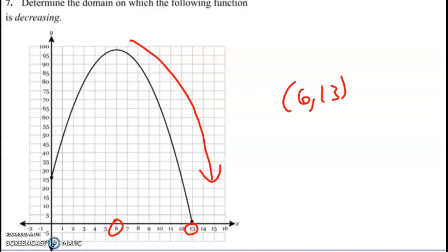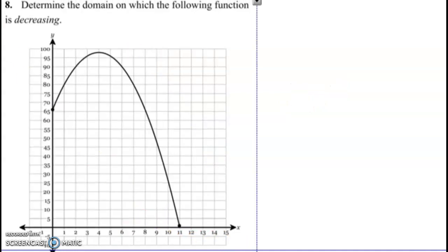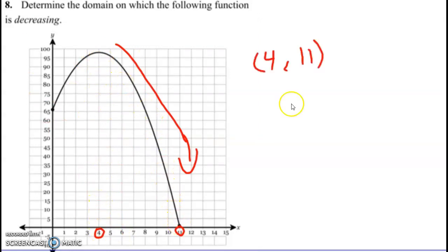Let's look at another example. It says determine the domain for which the function is decreasing. This is similar to the one we just did. It starts decreasing at 4, right about here at 4, and goes all the way down to 11. So we put it in parentheses: 4 to 11.